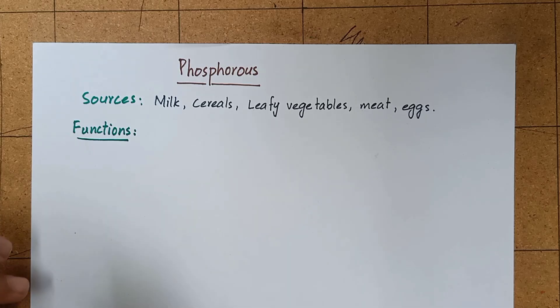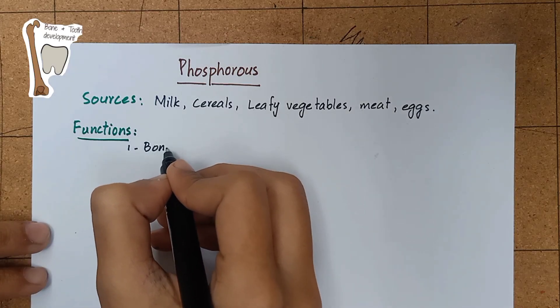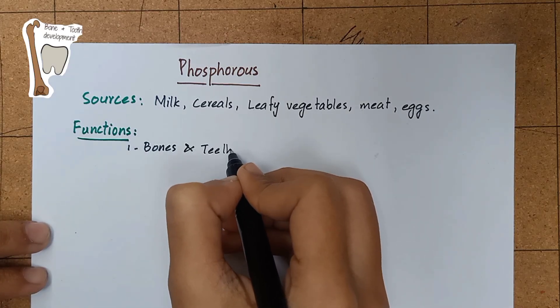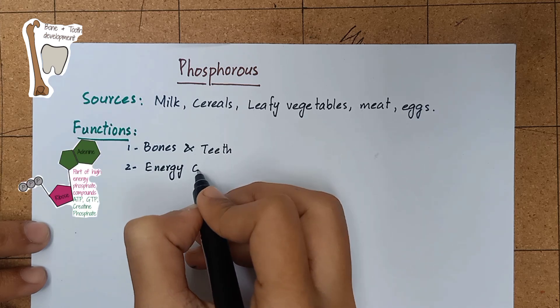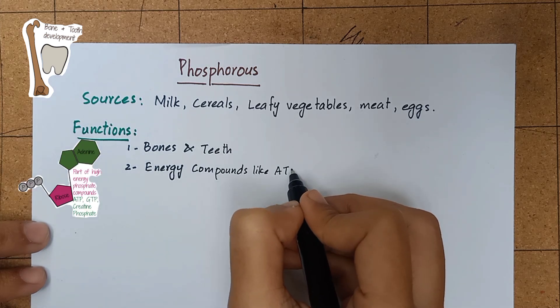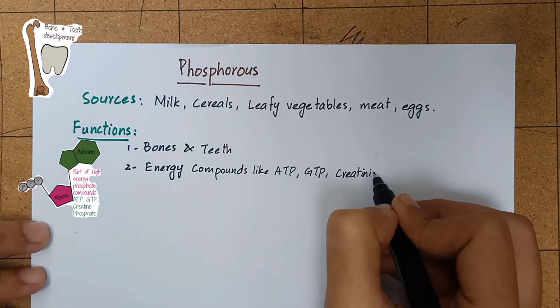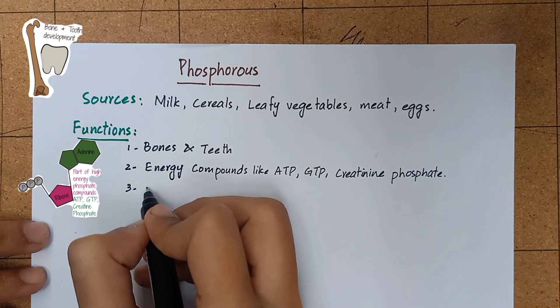Its biochemical functions are the development of bones and teeth in association with calcium. It has a central role in the formation of high-energy phosphate compounds like ATP, GTP, and creatinine phosphate.